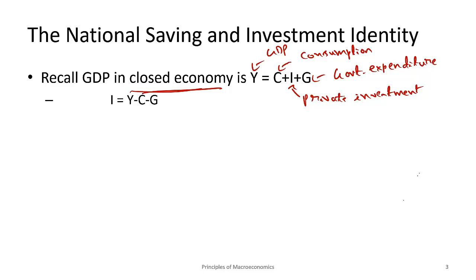Think about it from a very simplistic perspective. Suppose you have a monthly income of five thousand dollars. First you have to pay taxes, which is essentially government expenditure. Then you consume. Whatever is left after your consumption and government expenditure goes to your savings, and that savings becomes investment. So we'll try to understand how savings become investment in the next part.